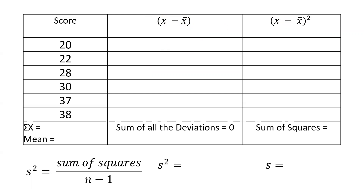Let's begin by computing for the mean before we compute for the variance and standard deviation. Since we're going to use the deviation method, it's important that we compute for the mean or the average. We get the sum of all values by adding 20 plus 22 plus 28 plus 30 plus 37 plus 38. The value we obtain is 175. To get the mean, we divide 175 by the number of scores, which is 6. The mean is going to be 29.17.